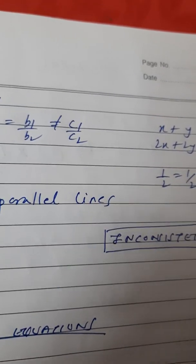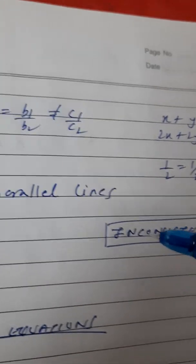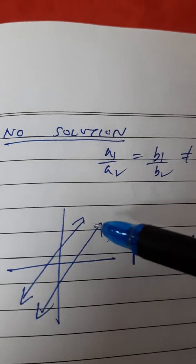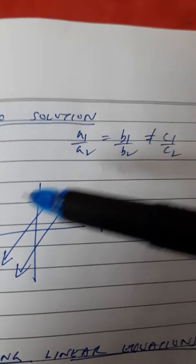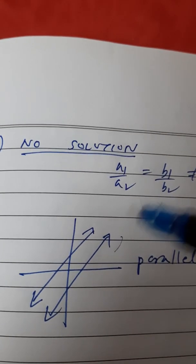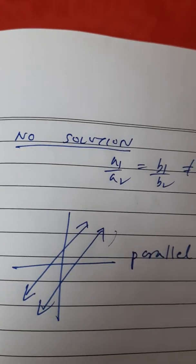Inconsistent means it has no solution. So, the first was consistent. Second was consistent dependent and this is inconsistent. And when we draw a graph of this, we will get parallel lines. So, all these cases I have also sent you in the form of notes just now. You can go through these three conditions.